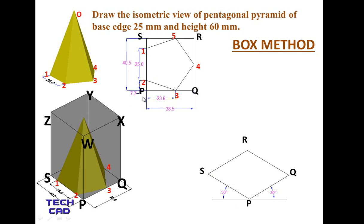Now place the pentagon inside this rectangle. The distance P2 is 7.7 mm — open the compass to 7.7 mm, place the steel part on P, and mark an arc on the PS line to get point 2. Similarly, S1 equals P2, which is also 7.7 mm, since it is a regular pentagon. For point 3, P3 is 23.8 mm — place the steel part at P and mark the arc to get point 3. S5 is located similarly.